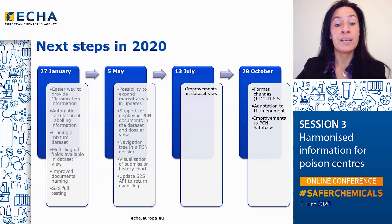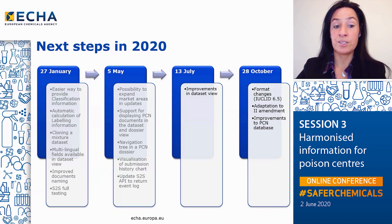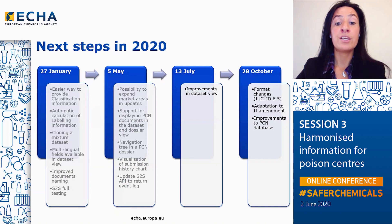More functionalities and additional improvements to the Poison Centers IT solution are foreseen during 2020. Another release in the cloud is planned for July, where further improvements to the dossier preparation from the dataset view are expected. Finally, the October release will reflect the adaptations to the Second Amendment to Annex 8, the Euclid format updates, and will bring announced functionalities to the Poison Centers database for appointed bodies and Poison Centers.